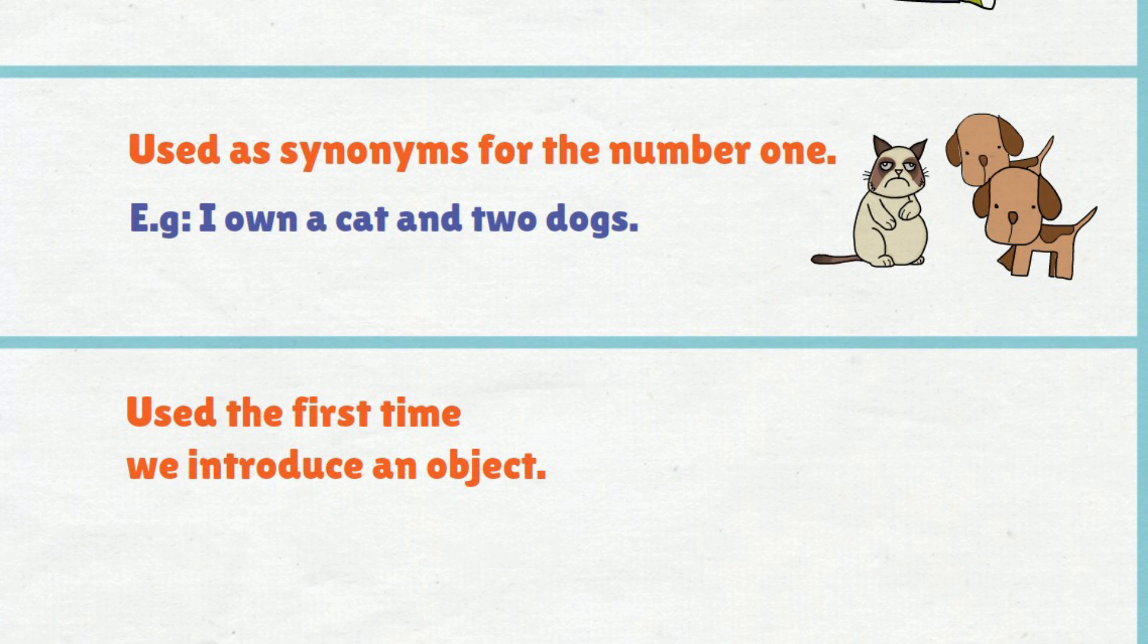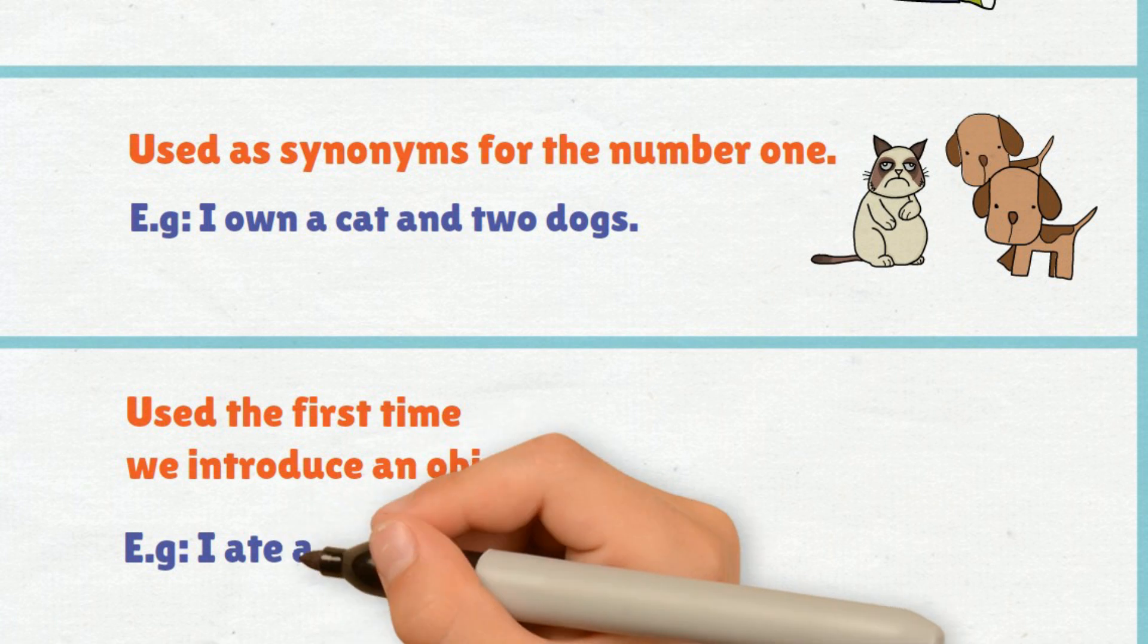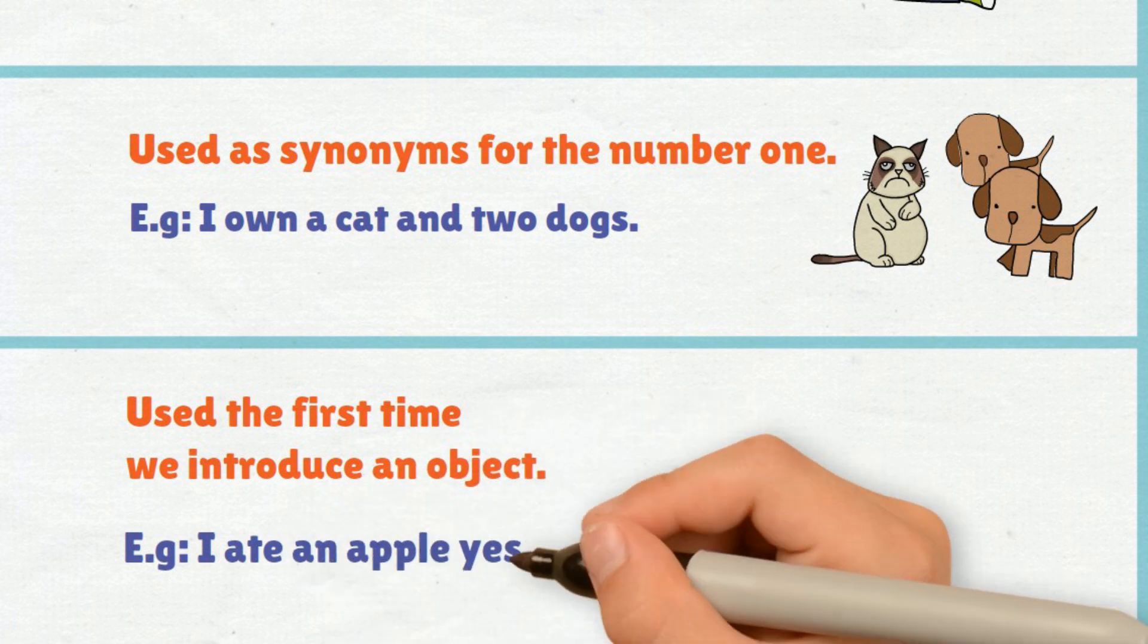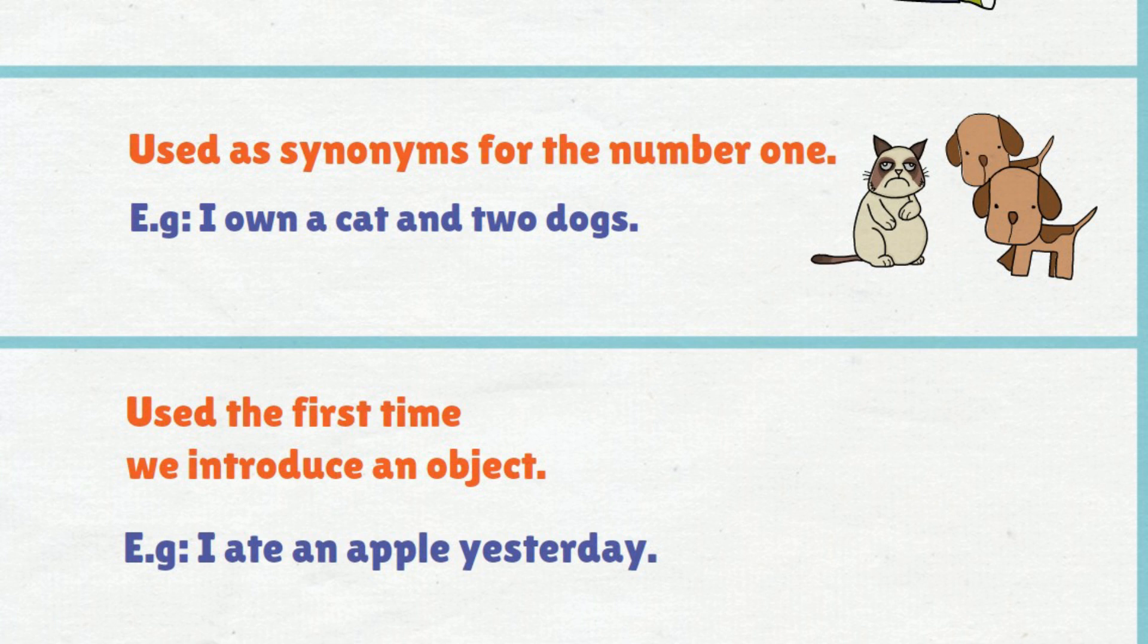A and An are used the first time we introduce an object. Example: I ate an apple yesterday.